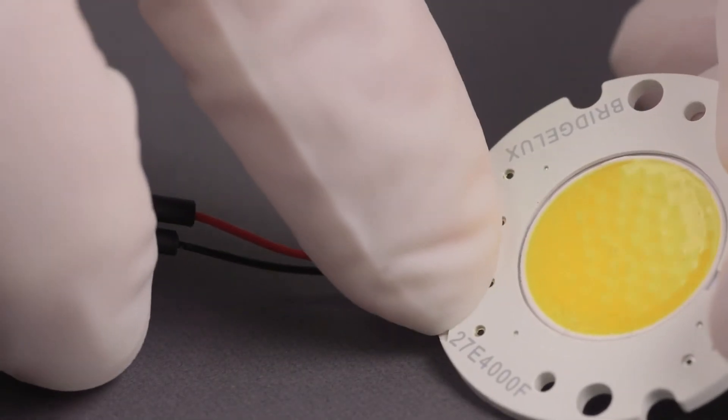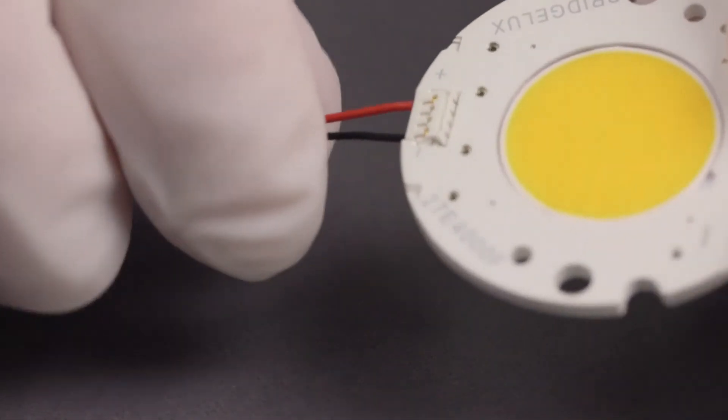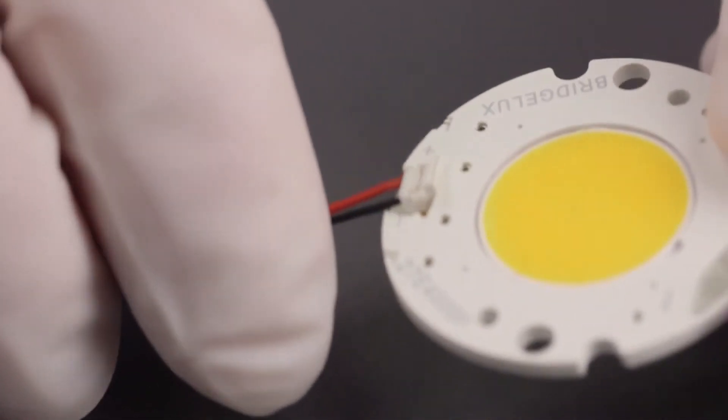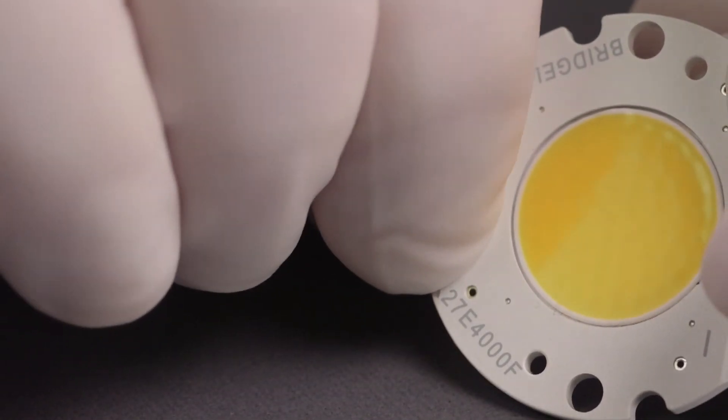During the mating process, be sure to keep the connector flat. The connector will not mate if the angle is greater than five degrees. Press down on the connector at the port until the connector snaps into place.